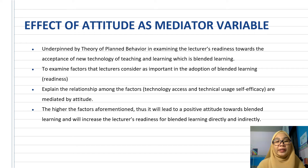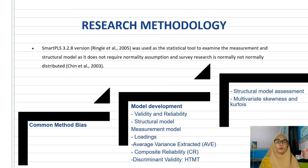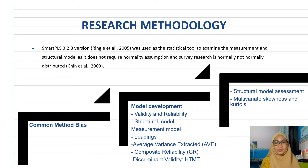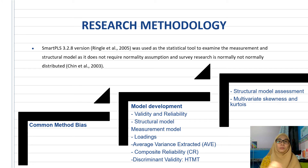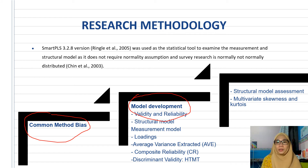For research methodology, this study uses SmartPLS to examine the measurement and structural model, because SmartPLS does not require normality assumptions and survey research data are normally not normally distributed, as mentioned by Chin (2003). The steps taken include: first, common method bias testing; then model development; followed by structural model assessment to check multivariate skewness and kurtosis and model fit.